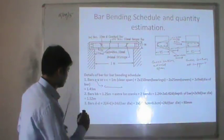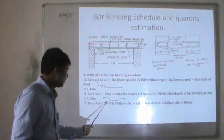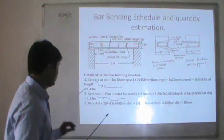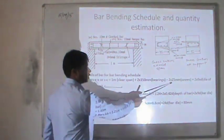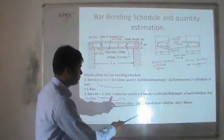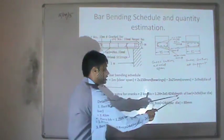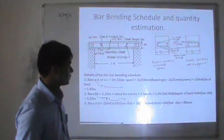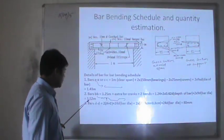The second type of bar is cranked at both ends. That bar has a length of 1.25 meters — which is 1 meter plus 150 mm bearing, minus 2 × 25 mm cover, plus extra for 2 cranks: 2 × 0.42D, where D is the depth of the bar measured from center to center. Plus 2 × 9D for the hooks, where D is the bar diameter. This totals to 1.52 meters.